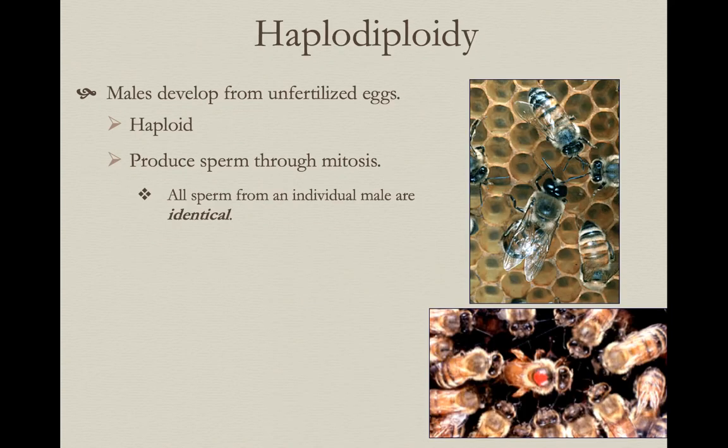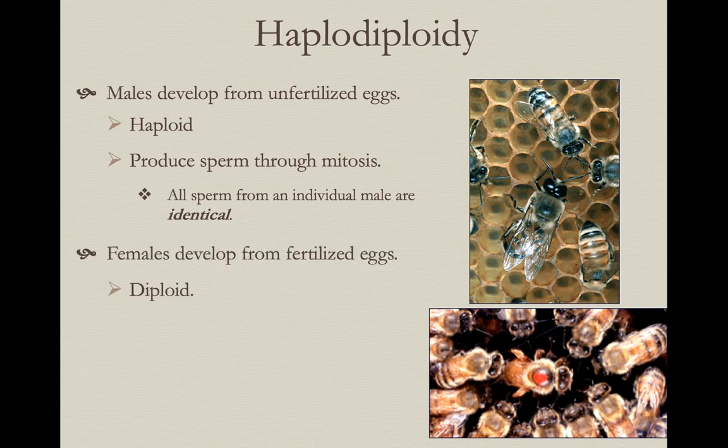In haplodiploidy, males develop from unfertilized eggs, so males have half the DNA that females do. Each male then produces sperm simply through mitosis, not meiosis. The result is they're passing on all of their DNA to their offspring — but it's just half the DNA compared to the females — and all of the sperm have the identical DNA. Females develop from fertilized eggs and are diploid like normal.